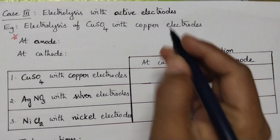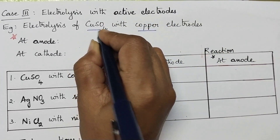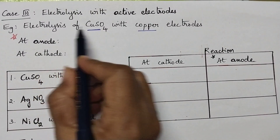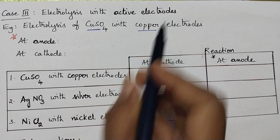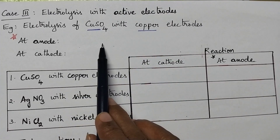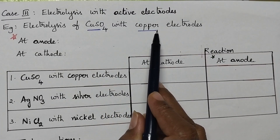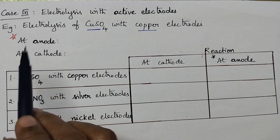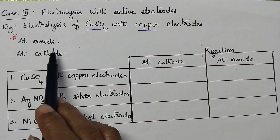But if the electrolysis is done in the presence of active electrodes — that means the electrodes are made up of the same material as the electrolytic solution — for example, let us consider the electrolysis of copper sulfate solution with copper electrodes. Here the electrolysis is done by using copper electrodes, that means copper electrodes are active electrodes. Let us consider what happens at the anode and at the cathode.